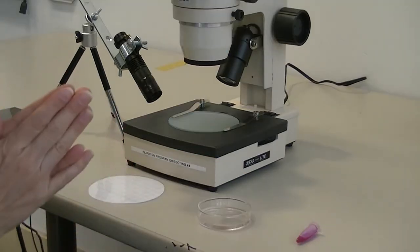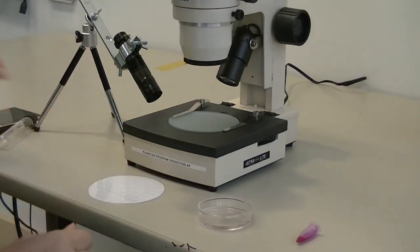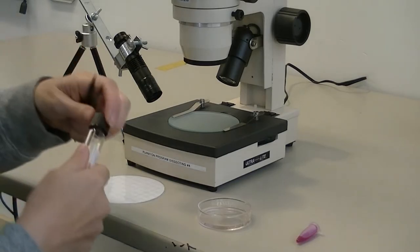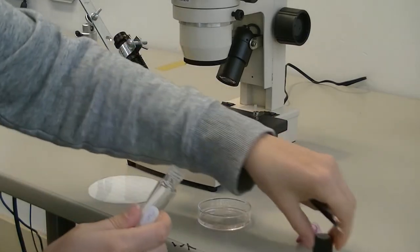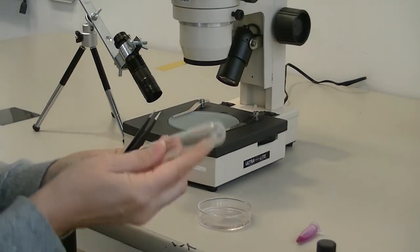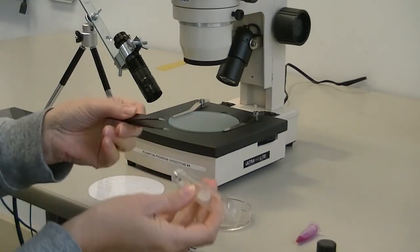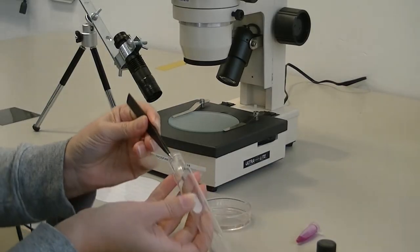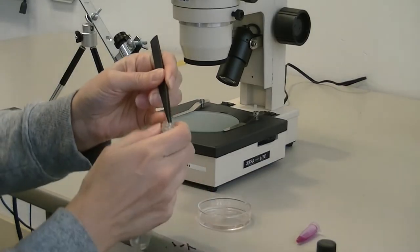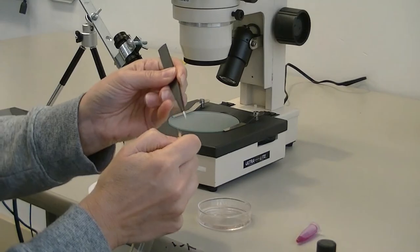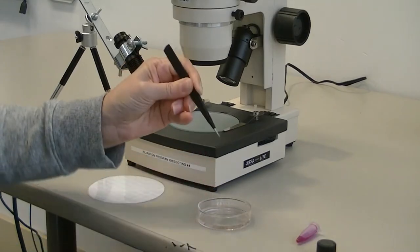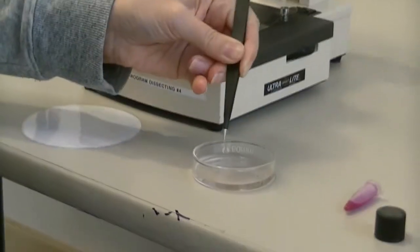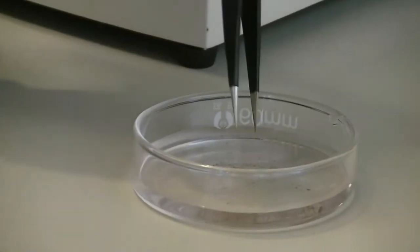After you put your Nile Red dye in, it's a good idea to put in a control sample of plastic, which we have here as cigarette butt filter fibers. I've got a little fiber on here. Actually, it's kind of a group of fibers.